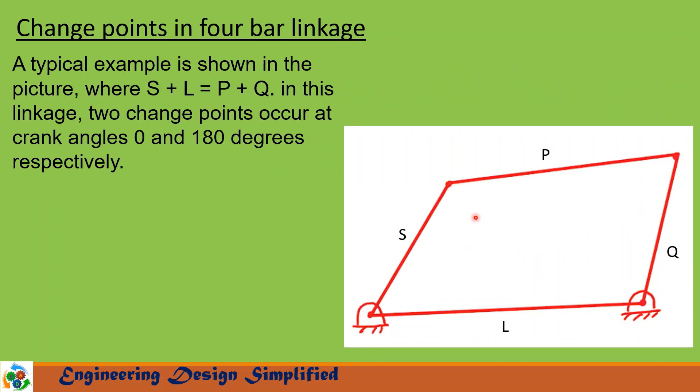A typical example of a four bar linkage is shown in this figure, where s + l = p + q. In this linkage, two change points will occur: one at crank angle zero degrees (the angle between these two links) and another change point when the angle between these two links is 180 degrees.